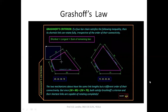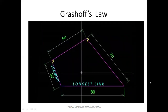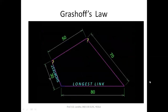Let us test this. The shortest link and the longest link add up to 30 + 80 = 110, and the other two links are 50 + 70 = 120. Since 110 is less than 120, Grashof's criteria is satisfied, so we should have a crank here.